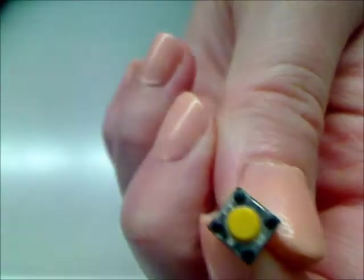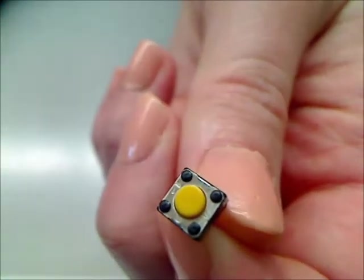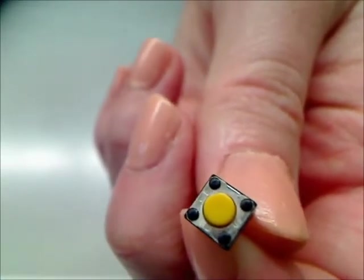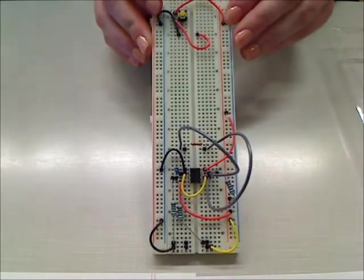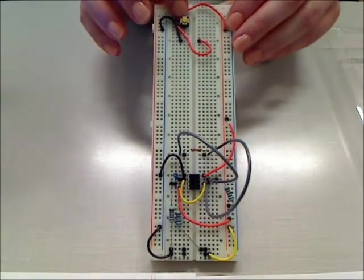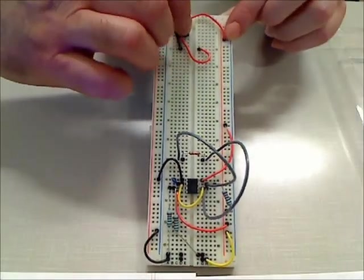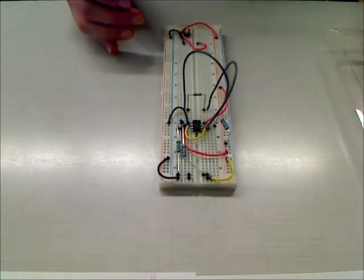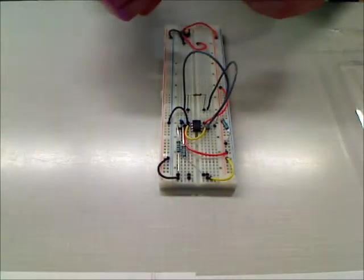Next thing you need to put in is your switch. Ask me what a switch does. What does a switch do, George? It either connects or disconnects you from your circuit. Now, this switch doesn't stay on. This is called a single pole, single throw, momentary, normally open. So, this switch is never on. It's only on when you press the button. We are almost done, ladies and gentlemen.